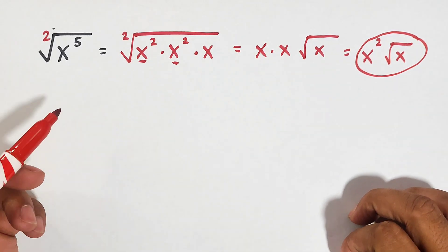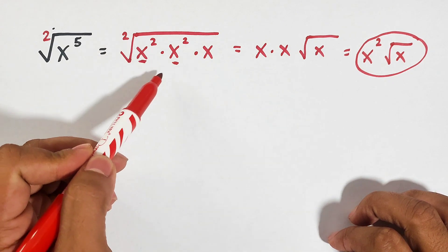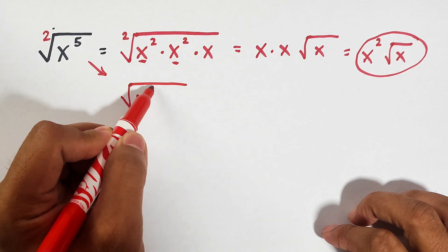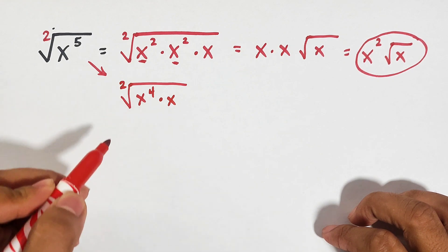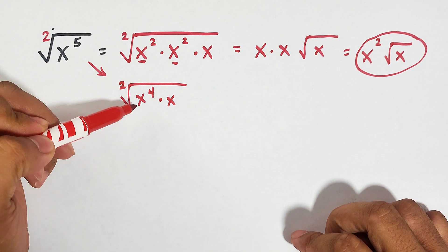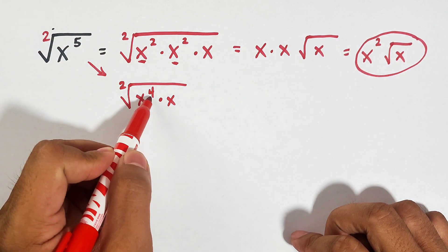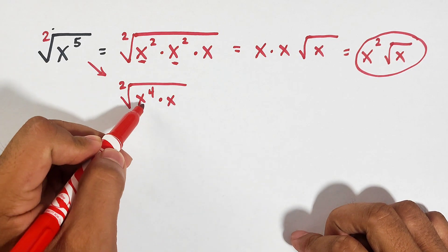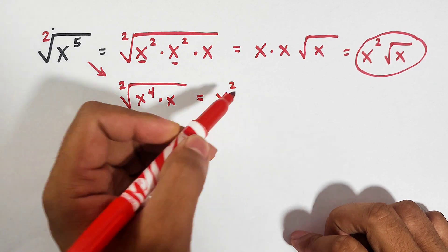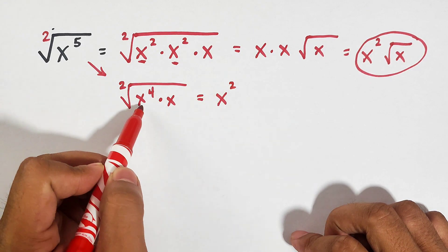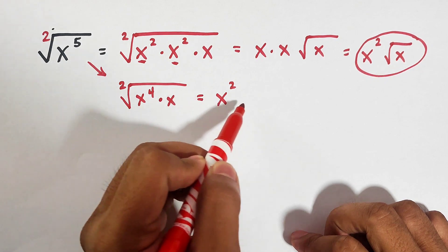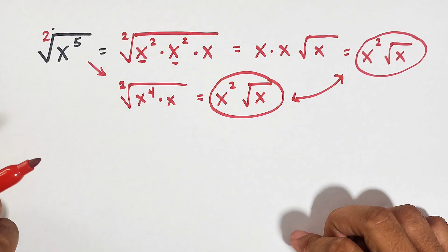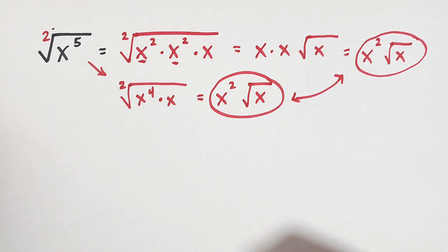Let me show you another way to do this. Instead of doing x squared times x squared times x, we can also simplify using the factors x to the fourth power times x — where the index is 2. The reason x to the fourth power is a perfect square is because we can divide its exponent by the index. The square root of x to the fourth power is x squared, because 4 divided by 2 is 2. Copy the base x, and since x alone is not a perfect square, copy the square root of x. As you can see, the two answers are the same.